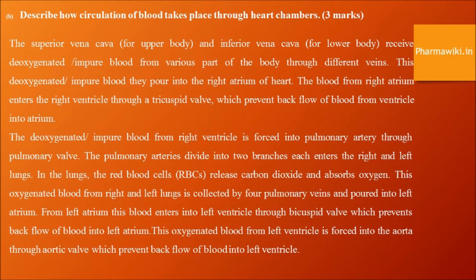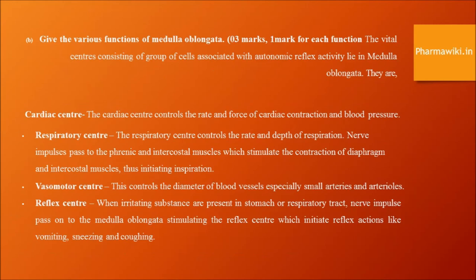Functions of the medulla oblongata. The vital centers consisting of groups of cells associated with autonomic nerve reflex activity lie in the medulla oblongata. Cardiac center: controls the rate and force of cardiac contraction and blood pressure. Respiratory center: controls the rate and depth of respiration; nerve impulses pass to the phrenic and intercostal muscles, stimulating contraction of the diaphragm and intercostal muscles to initiate inspiration. Vasomotor center: controls the diameter of blood vessels, especially small arteries and arterioles. Reflex center: when irritating substances are present in the stomach and respiratory tract, nerves stimulate the reflex center, initiating reflex actions like vomiting, sneezing, and coughing.